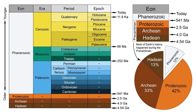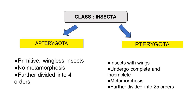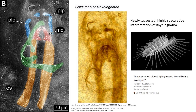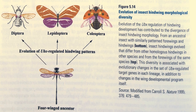Insects are believed to have originated around 400 million years ago during the Devonian period. There is fossil evidence, such as the earliest wingless insects Apterygota, that provides insight into the primitive forms of these creatures. One of the earliest known insects, Rhyniognatha, is a wingless insect from the Devonian period.